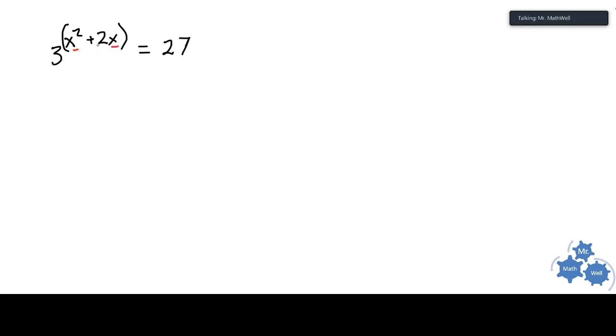So there's two different ways you could do this. You could use logarithms to solve this, but in this case what you want to notice is that this base on the left side and this number on the right side can both be written as a power of three. Three is three to the power of one, and 27 is three to the power of three.